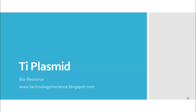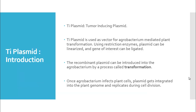Welcome to the presentation on Ti plasmid. Ti plasmid is the tumor-inducing plasmid. It is used as a vector for Agrobacterium-mediated plant transformation.